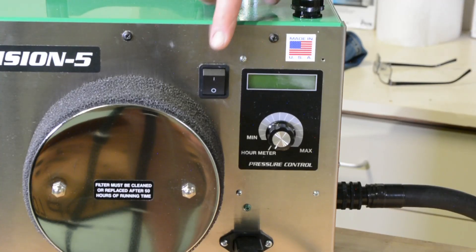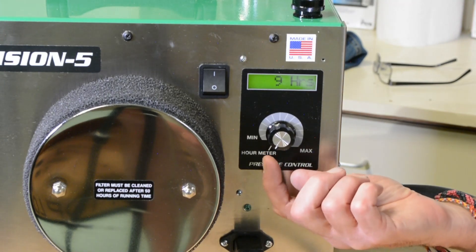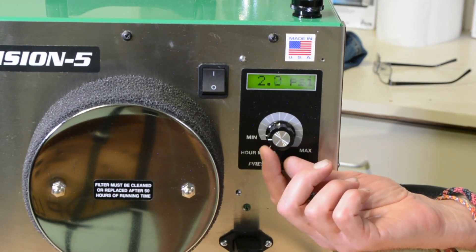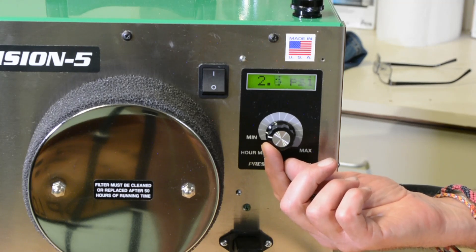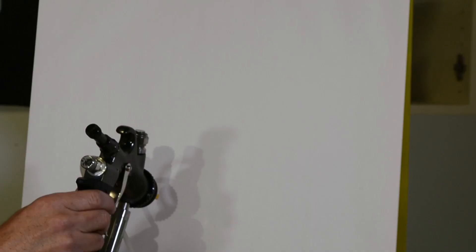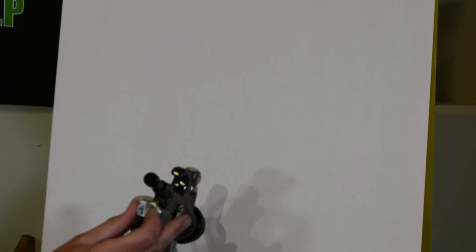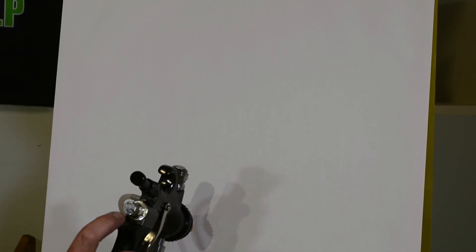The first thing we're going to do is turn the machine on. We have the hour meter, and then we'll rotate the dial until we get about two and a half psi. Then we're going to spray. We're going to adjust the material and open up the material screw about two turns or one half a turn.